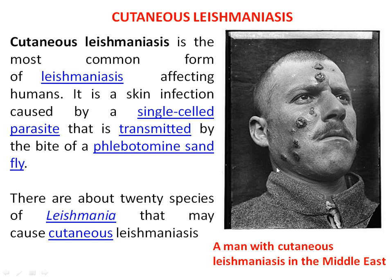What is Cutaneous Leishmaniasis? Cutaneous Leishmaniasis is the most common form of Leishmaniasis affecting human beings. It is a skin infection caused by a single-celled parasite that is transmitted by the bite of Phlebotomine sandfly. There are about 20 different species of Leishmania that may cause Cutaneous Leishmaniasis. In the image, you can see how the skin is being affected — skin patches that appear like leprosy.